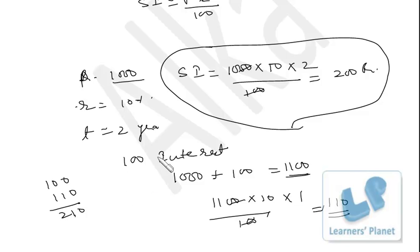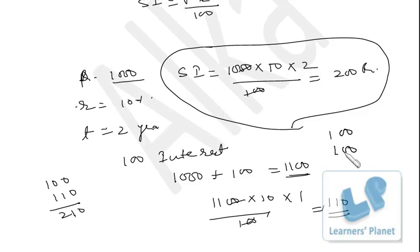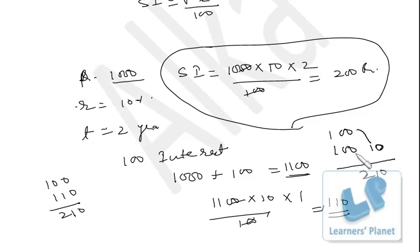If you wish to calculate it separately: for both years, simple interest remains the same — 100 and 100. For compound interest, you also earn interest on the first year's interest. So 10% of Rupees 100 is Rupees 10. Total compound interest is 100 plus 100 plus 10, that is 210. The difference between simple interest and compound interest in this case is just Rupees 10. Many times the question asks for the difference between SI and CI for 2 years — the answer here is Rupees 10.